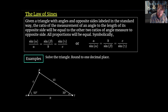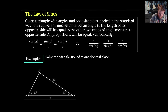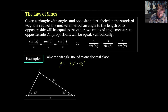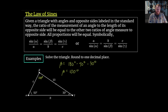Let's solve this first example triangle. Since we know two of the angles, the easiest first step is to find the missing angle. The sum of all angles in any triangle is 180 degrees. To get the missing angle beta, we say 180 degrees minus 50 degrees for alpha minus 30 degrees for gamma, giving us beta equals 100 degrees. There's our first piece of the triangle solved.